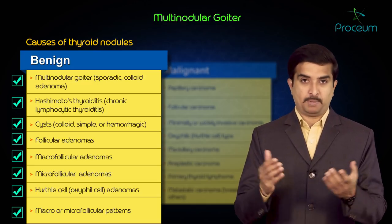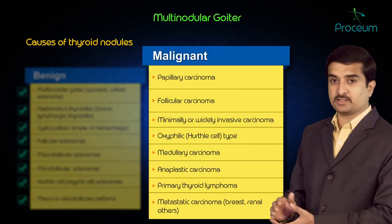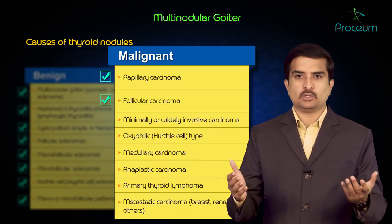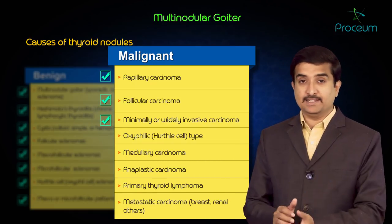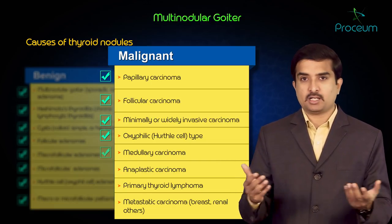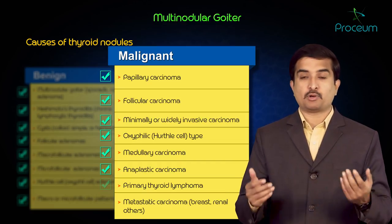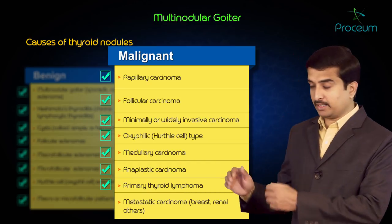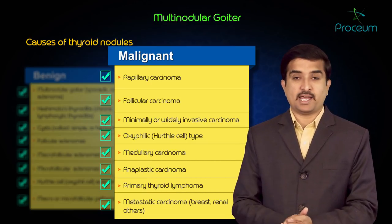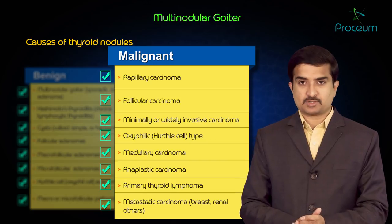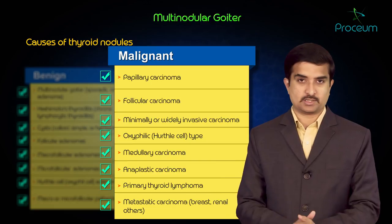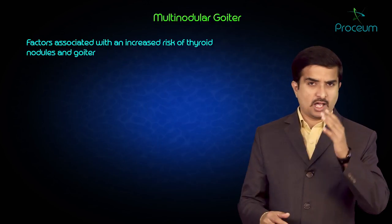On the malignant side: papillary carcinoma, follicular carcinoma (minimally or widely invasive type), Hurthle cell type, medullary carcinoma, anaplastic carcinoma, primary thyroid lymphoma, and metastatic carcinoma. Cancers of the breast, renal, and other malignant neoplasms that spread to the thyroid can also be responsible for the development of thyroid nodules.